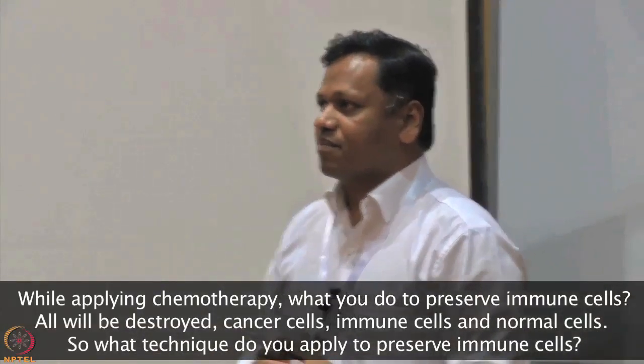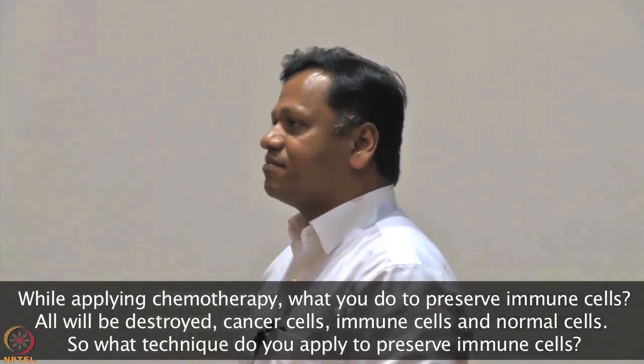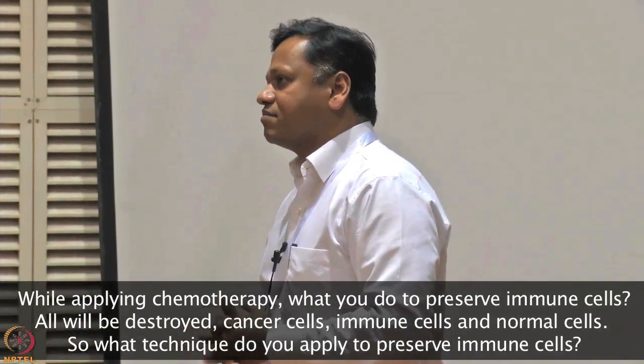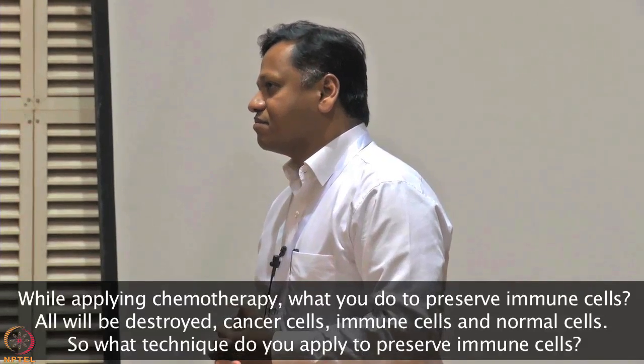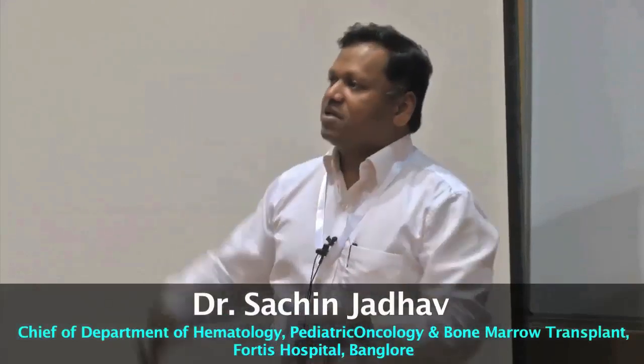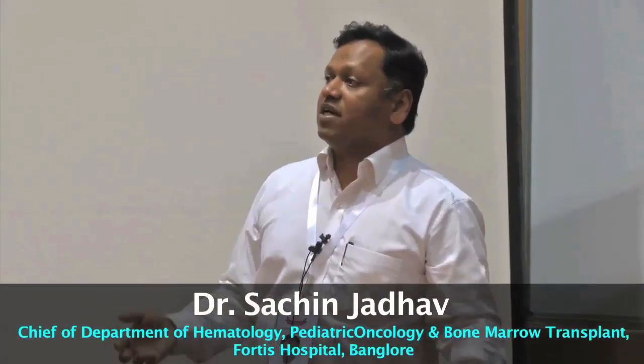Question: while applying chemotherapy, what do you do to preserve immune cells, since chemotherapy destroys cancer cells, immune cells, and normal cells? Answer: You cannot do anything. Chemotherapy is like carpet bombing — like dropping a bomb to kill 5000 terrorists; normal people also die. Cancer cells die, and normal bone marrow dies. In all of our patients, the bone marrow actually gets completely killed — WBCs go down to zero, platelets go down to zero. As of now, we do not know how to prevent this.